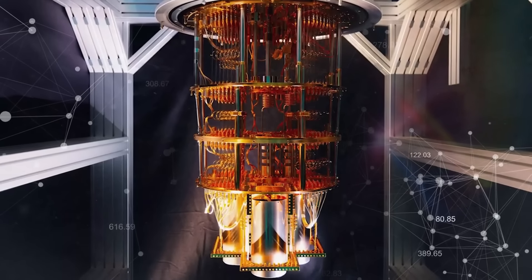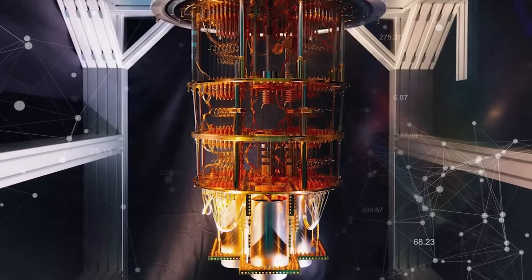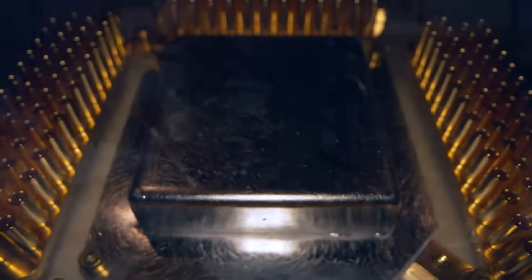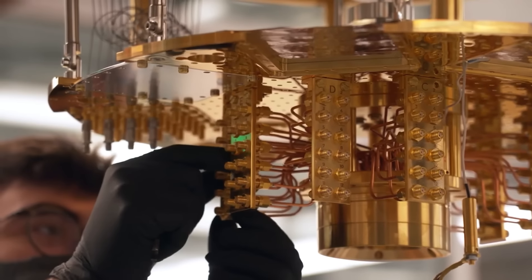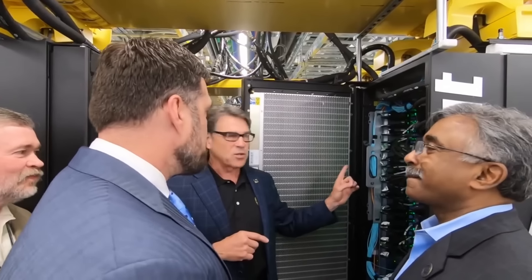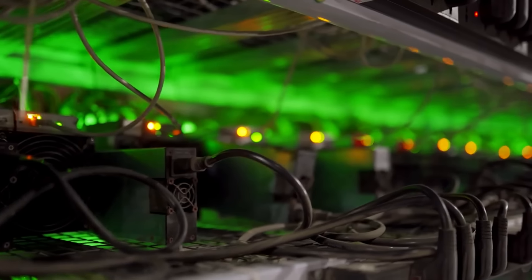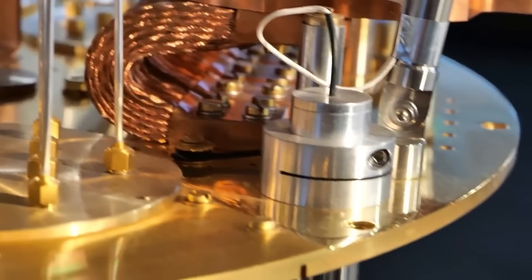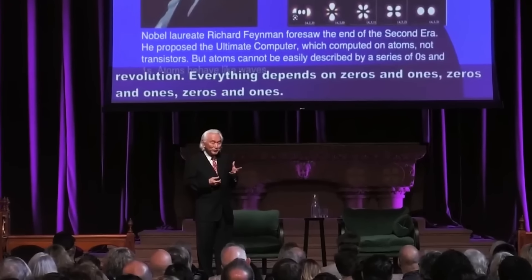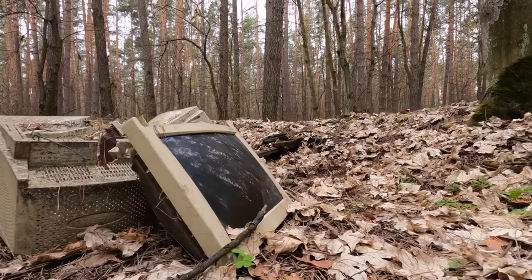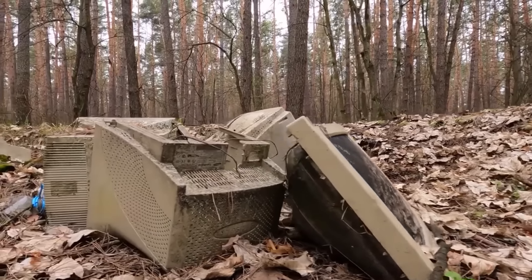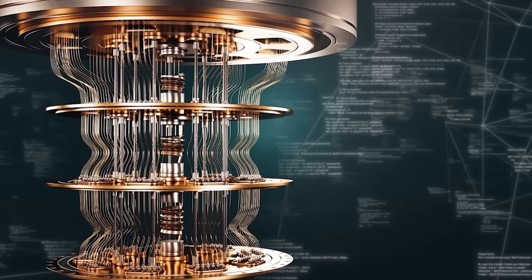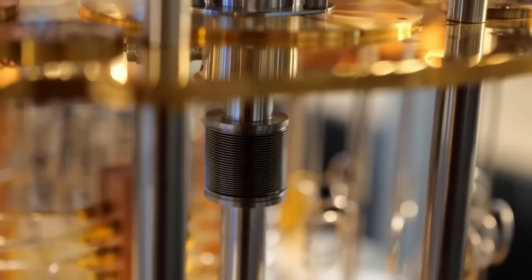Google's quantum computer Sycamore has been making waves in the tech world and for good reason. In 2019, it achieved something called quantum supremacy, which is a fancy way of saying it did a task so complex that the world's most advanced classical computer would need about 10,000 years to complete it. Sycamore did it in just 200 seconds. Imagine trying to solve a puzzle that everyone says will take an eternity and you do it over a coffee break. That's the level of achievement we're talking about here.